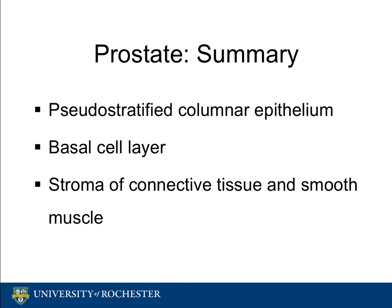In summary, the peripheral zone is the most abundant section of the prostate and is the region where prostatic glands are located. The glands are irregularly shaped, composed of pseudostratified columnar epithelium with a basal cell layer, and enclosed by a stroma of connective tissue and smooth muscle. This concludes our review of the normal histology of the prostate. Thank you for watching.